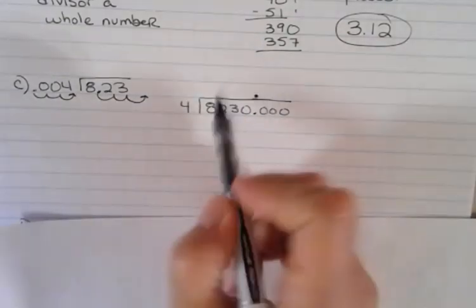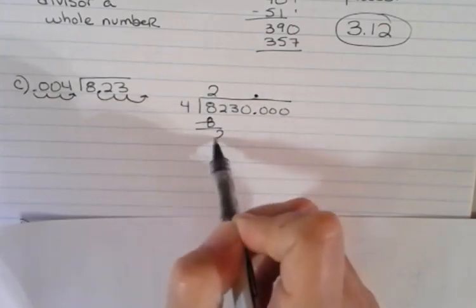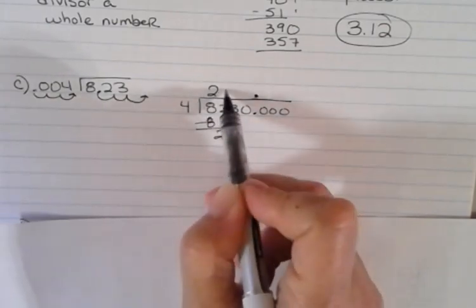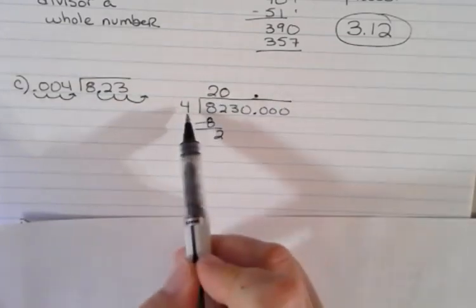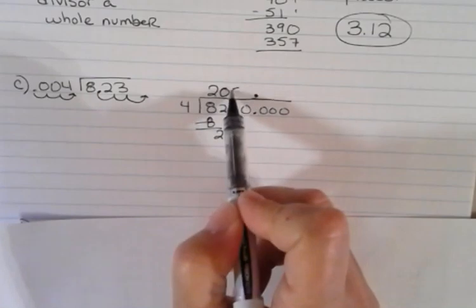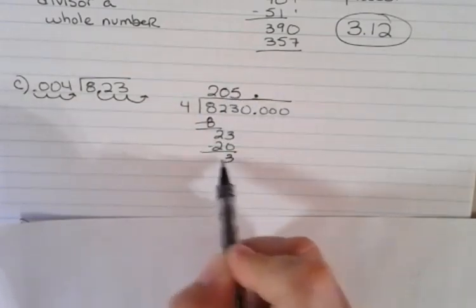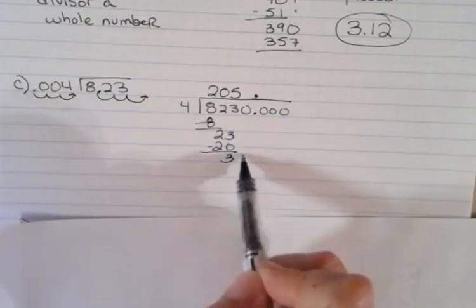Four goes into eight twice. Bring down the two. It does not go into two, so I put a zero. Then bring your three down. Four goes into 23 five times. I'm going through the division quickly because this is a skill you already have. Bring down the zero.